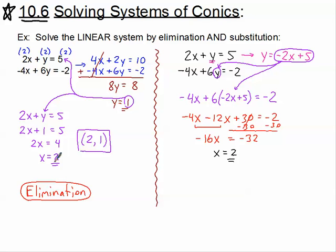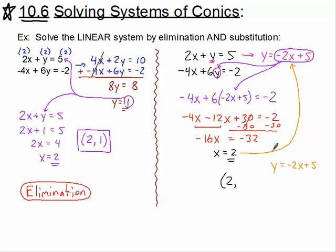We already knew x equals 2 from elimination, but this confirms it. Now I substitute x equals 2 back into y equals negative 2x plus 5: y equals negative 2 times 2 plus 5, which is negative 4 plus 5, which equals 1. So y equals 1, giving the same ordered pair (2, 1) as elimination. This is substitution.